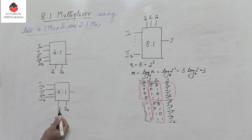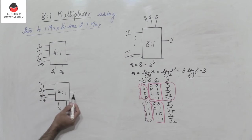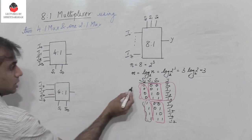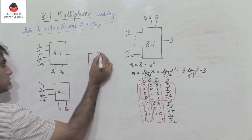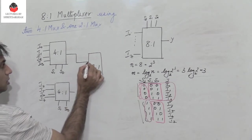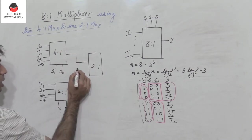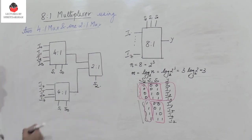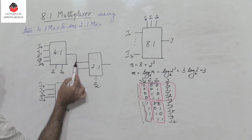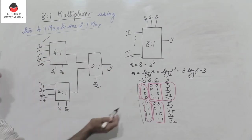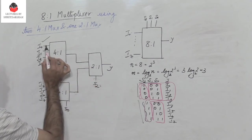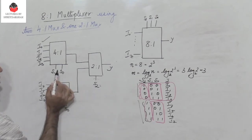For this second 4-to-1 MUX, when S1 S0 is 0 0, i4 comes through; 0 1 gives i5; 1 0 gives i6; and 1 1 gives i7. Now I need to select the first four inputs when S2 is 0 and the next four when S2 is 1. Since there is only one select line, I use a 2-to-1 MUX where the outputs of both 4-to-1 MUXes become the inputs, with S2 as the select line. When S2 is 0, the first 4-to-1 MUX is selected, so i0 through i3 appear at the output.